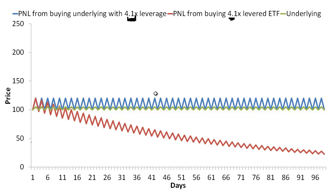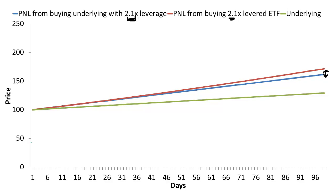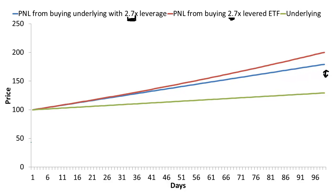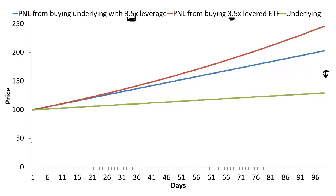Now we're going to try the same thing for a different path. I'm going to change the path such that the underlying steadily goes up. Here we can see the levered ETF outperforms levering up the underlying on your own by about this much for a 2-to-1 levered ETF. As I increase the degree of leverage, that distance between the red line and the blue line is increasing.